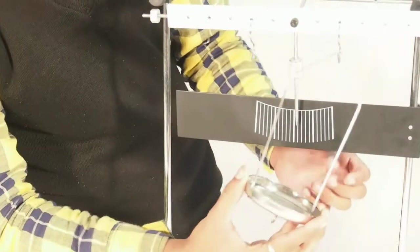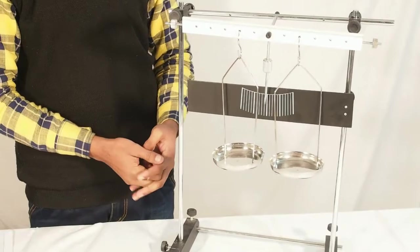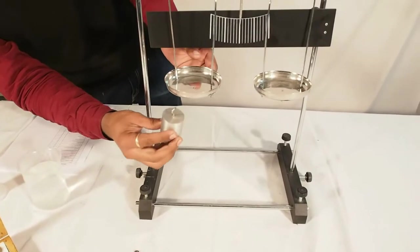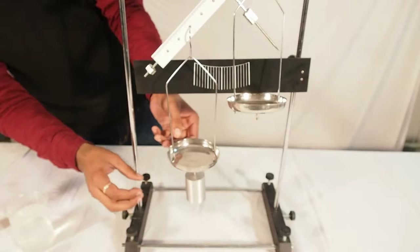Now hang the pans from the hooks as shown. Now hang the solid aluminum cylinder from the bottom hook of the left hand sided pan as shown.